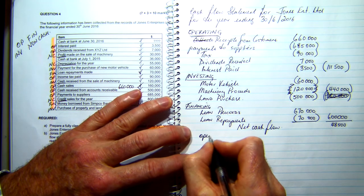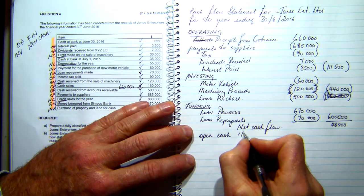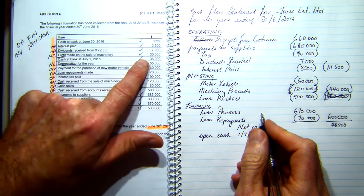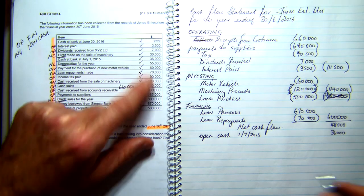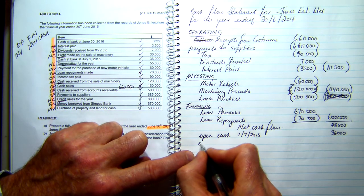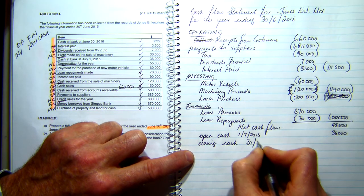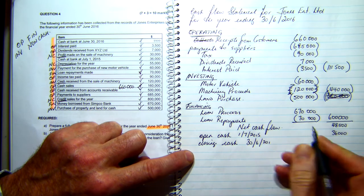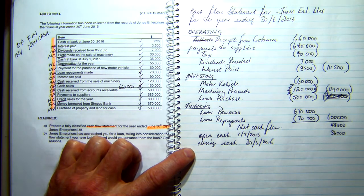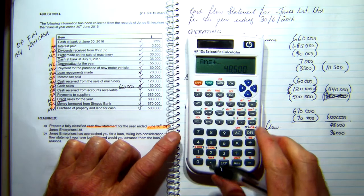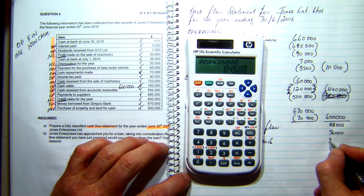The opening cash balance at 1st of July 2015 is $36,000. Adding the net cash inflow of $48,500 gives a closing cash balance at 30th of June 2016 of $84,500.